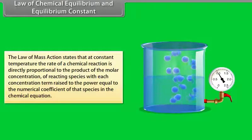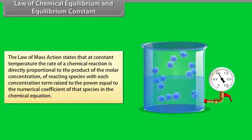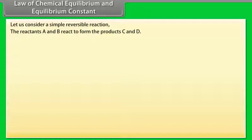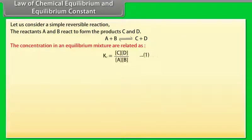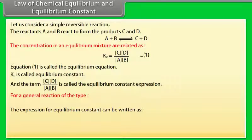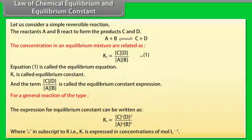Law of Chemical Equilibrium and Equilibrium Constant: The law of mass action states that at constant temperature, the rate of a chemical reaction is directly proportional to the product of the molar concentrations of reacting species, with each concentration term raised to the power equal to the numerical coefficient of that species in the chemical equation. For reactants A and B forming products C and D, the equilibrium constant KC is expressed in mole per liter.